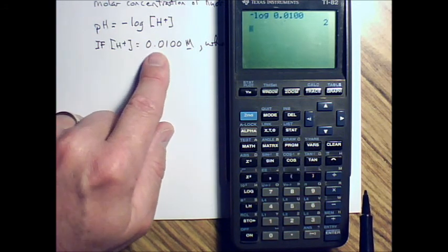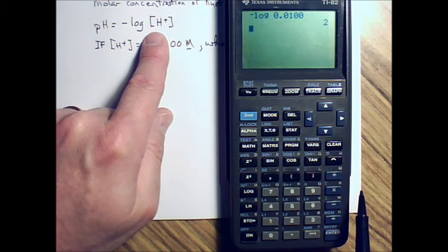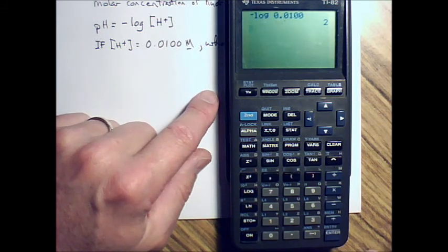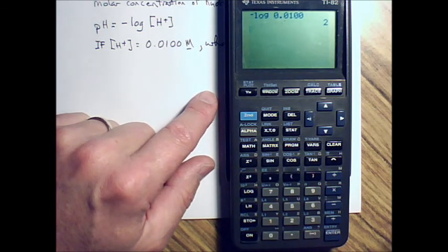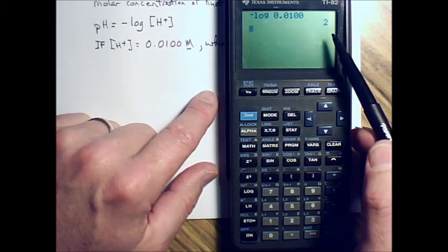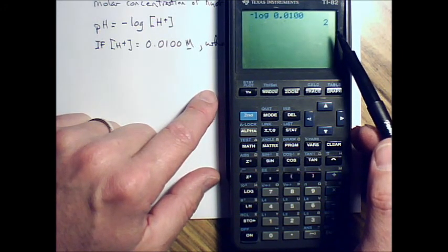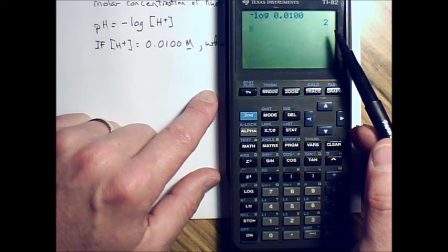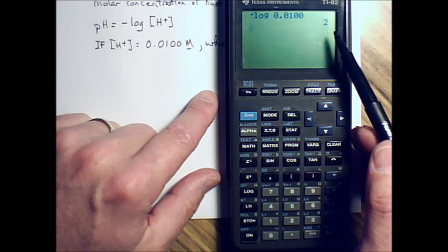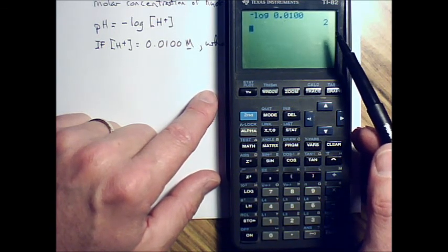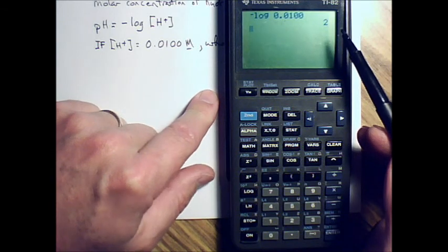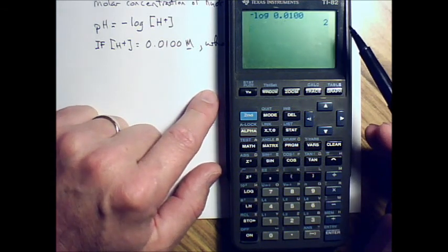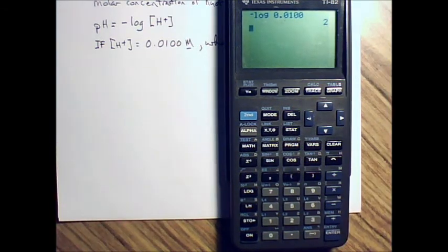Negative logarithm of the molar concentration of the hydrogen ion is 2. Now you have to have the right number of significant digits. The right number of significant digits is we're going to use the same rule as multiplication and division. That's not the way you're supposed to do it. There's actually a new set of rounding rules for logarithms and exponents, but we're not going to learn that in here.